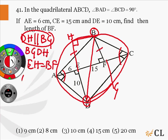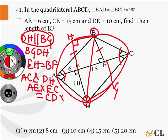For chords AC and DH, AE into EC will be equal to DE into EH. This gives us EH equal to BF equal to 9 cm.